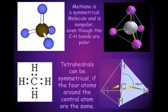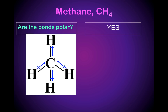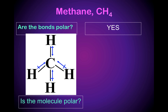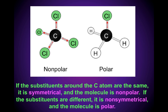Tetrahedrals are symmetrical if the four atoms around the central atom are the same. For methane, are the bonds polar? Yes, directed towards the carbon. But is the molecule polar? No, because it is a symmetrical molecule. Symmetrical molecules are always nonpolar molecules. If the substituents around the carbon atom are the same, it is a symmetrical molecule and the molecule is nonpolar. But if the substituents are different, it is an asymmetrical molecule and the molecule is polar.